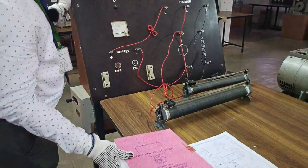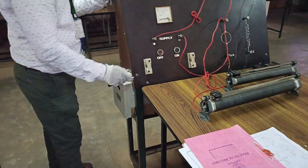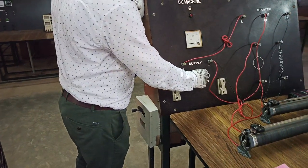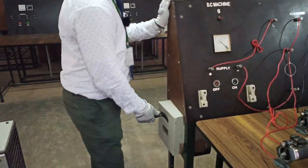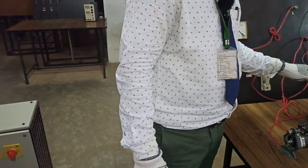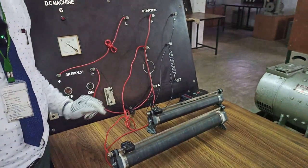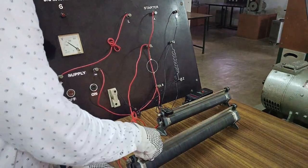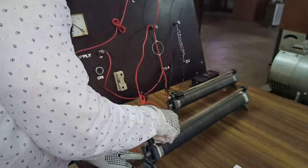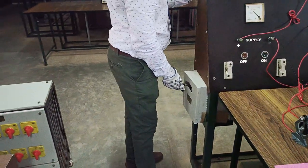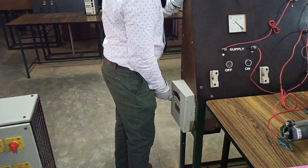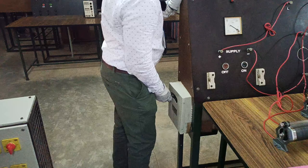First you have to give the supply to the DC shunt motor and keep this field rheostat in minimum resistance position and this should be in maximum but it takes some time to start that's why I am keeping in minimum position. Now we are going to start the DC shunt motor.